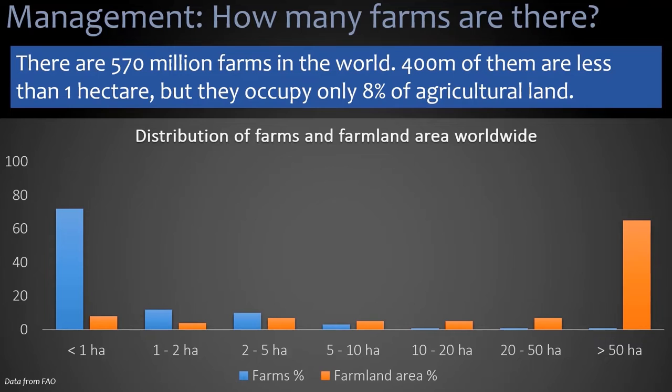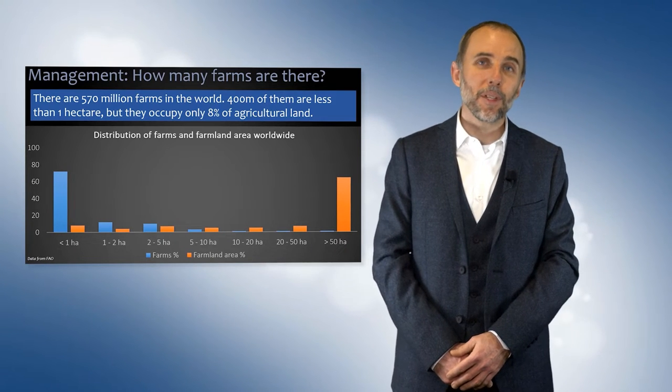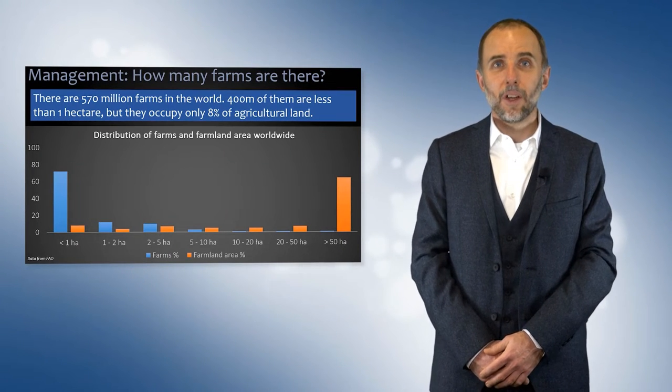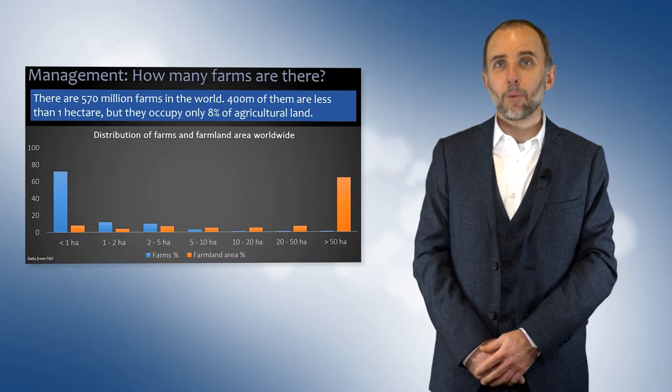That land is managed by farmers — here you can see a few of them in different settings. There are over 570 million farms in the world, at our best estimate, though it's quite hard to count. Most of them — 400 million — are less than one hectare, but they occupy only 8% of the agricultural land. So smallholder farmers are the majority of farmers, and the distribution of farms and farmland worldwide is quite unequal.